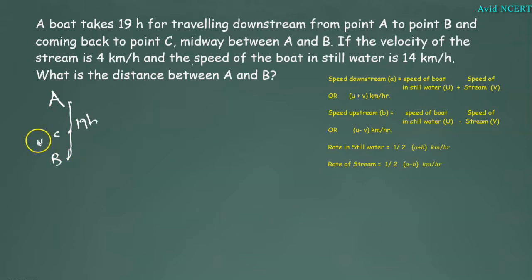This is the upstream. The velocity of the stream, rate of stream SM equals 4 km per hour, and the speed of the boat in still water SL equals 14 km per hour. What is the distance between A and B? The distance equals question mark.